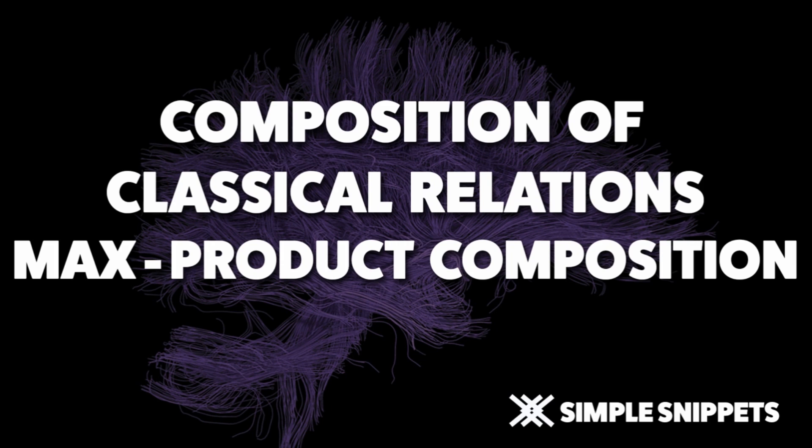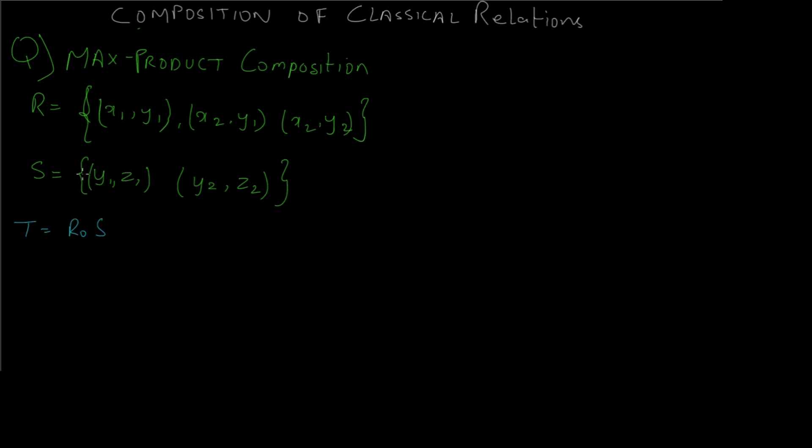So let's get directly to the numerical. As you can see on the screen, I have the question and we have to make a composition relation T which is equal to R∘S using the max-product composition technique.